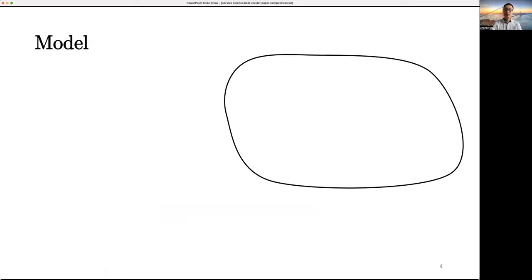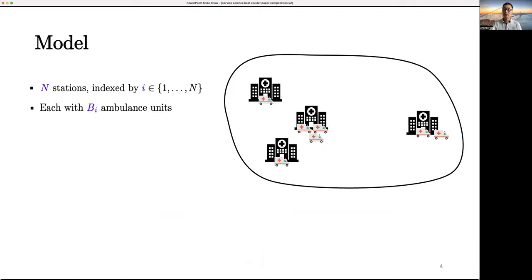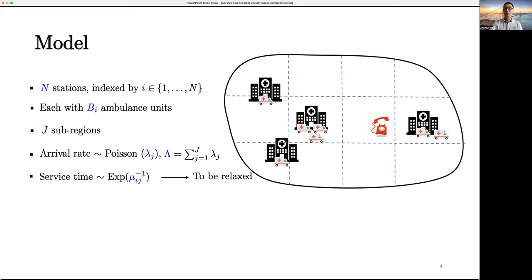Our model addresses the city's N emergency stations, each with B_i ambulance units. The city is divided into J subregions, considering patients from different regions with different emergency levels. Emergency calls from subregion j follow a Poisson distribution with parameter lambda_j, while ambulance service times follow an exponential distribution with rate mu_ij. We will later show our results also hold for general service time distributions.